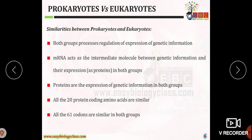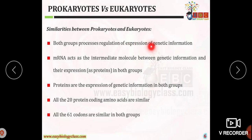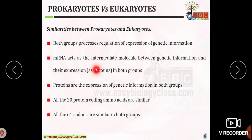Both groups possess regulation of expression of genetic information. The expression means a particular gene is converted into a protein or a sequence of amino acids. mRNA acts as an intermediate molecule between genetic information and its expression as proteins. Both organisms show the central dogma of life: DNA to RNA and RNA to protein.